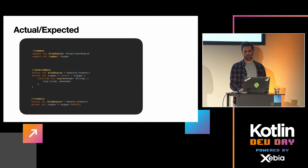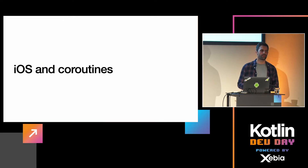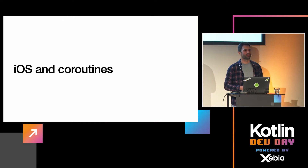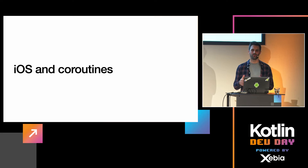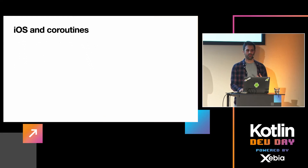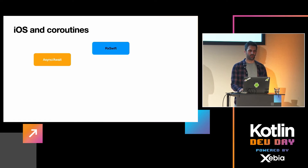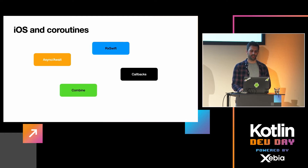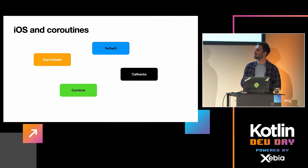One of the most important subjects in KMM is how iOS and coroutines come together — how iOS can read coroutines. There are a few frameworks you can use: KMPNativeCoroutines (Erik Swift), Async/Await for Swift 5.5, callbacks, and Combine. In our project, we chose Combine.